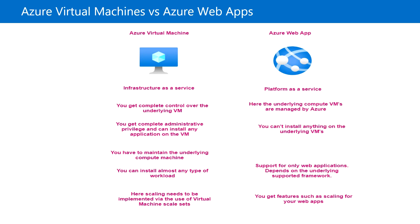In the Azure virtual machine, if there is high traffic or increased usage, scaling has to be managed by ourselves — in that case we need to implement a virtual machine scale set. Whereas in Azure web app, this scaling feature is taken care of by Azure itself.